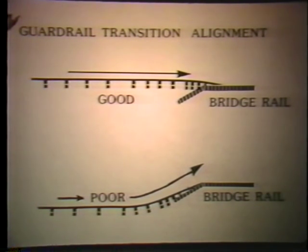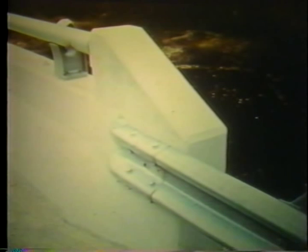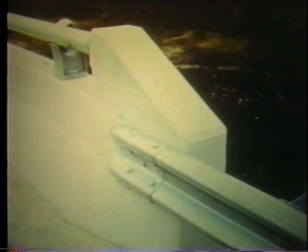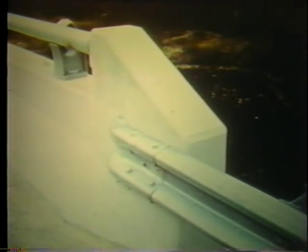Stiffening features aren't the only concern for transition performance — the alignment of a transition is also important. Transitions with reverse flares may pocket a vehicle. Here, the bridge rail end section was flared away from the roadway and transitioned from conventional safety shape to a vertical face at the upstream end. The W-beam is installed flush with the safety shape face, and the concrete parapet wall end is tucked back under the W-beam to prevent wheel snagging, though the end cap is incorrectly lapped.